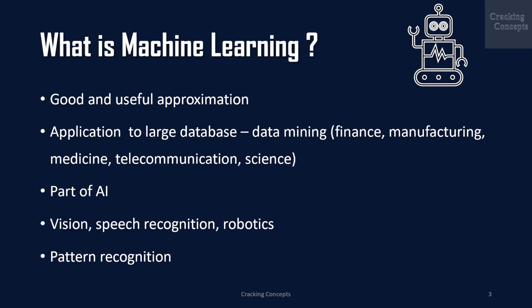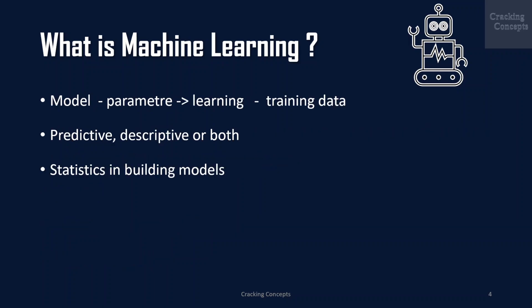Let us take the example of recognizing faces. By analyzing sample face images of a person, a learning program captures the pattern specific to that person and then recognizes them by checking for this pattern in a given image. This is one example of pattern recognition. We have a model defined up to some parameters, and learning is the execution of a computer program to optimize the parameters of the model using the training data or past experience. The model may be predictive to make predictions in the future, or descriptive to gain knowledge from data, or both.